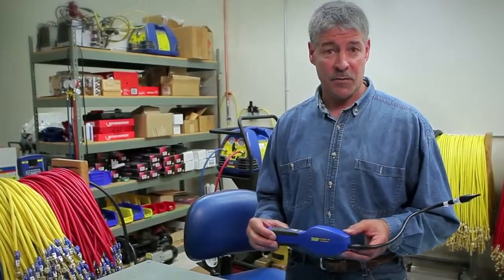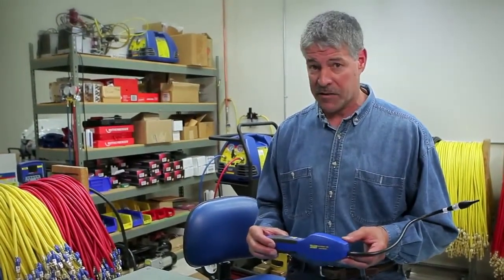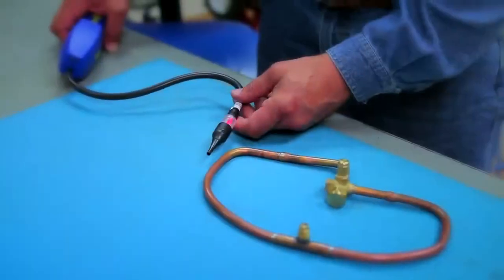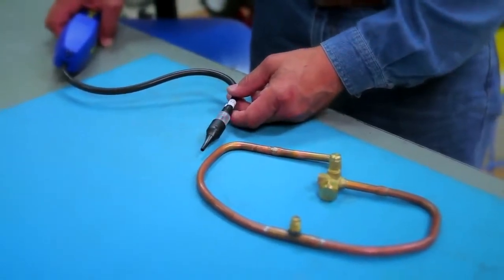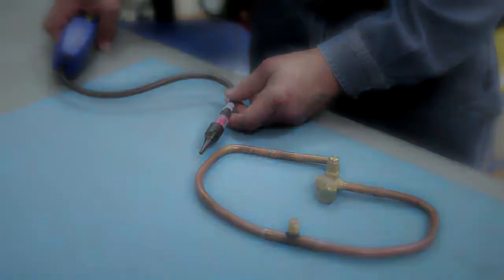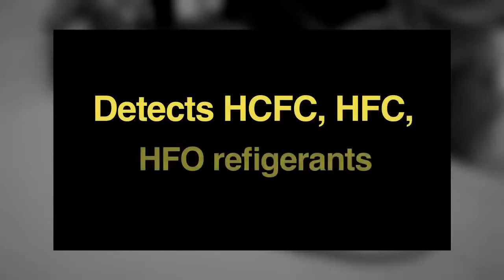The Acuprobe UV uses an electrolyte sensor on the sniffer wand, which has a longer sensor life than traditional heated anode or heated diode detectors. It's super sensitive to detect a broad range of HCFC, HFC, and HFO refrigerants.